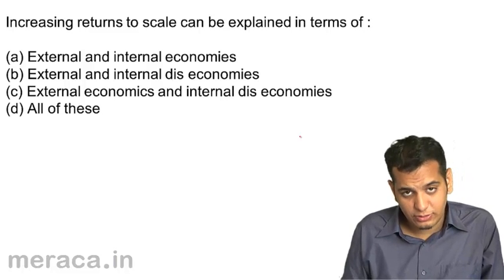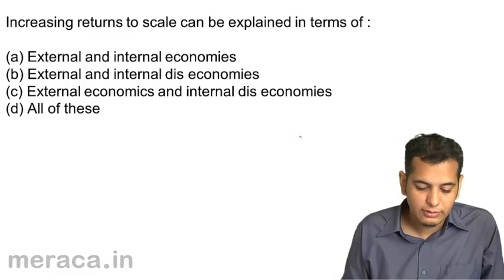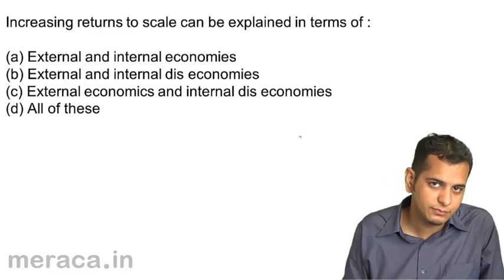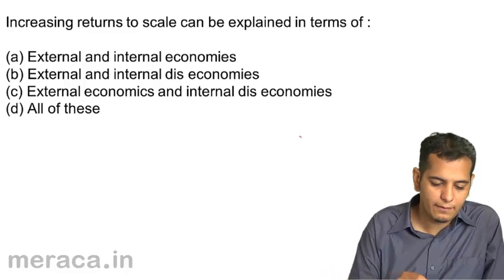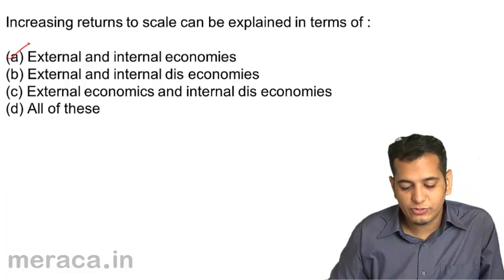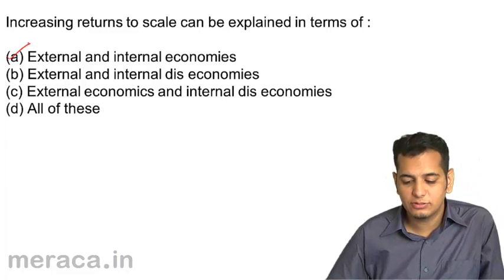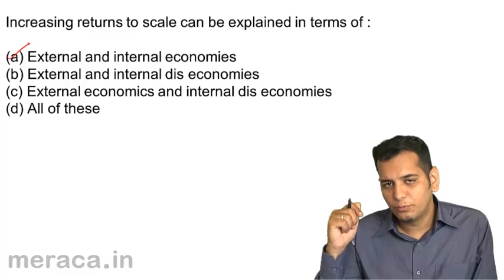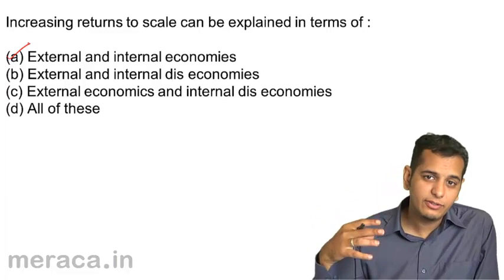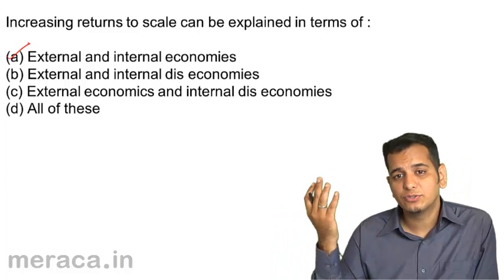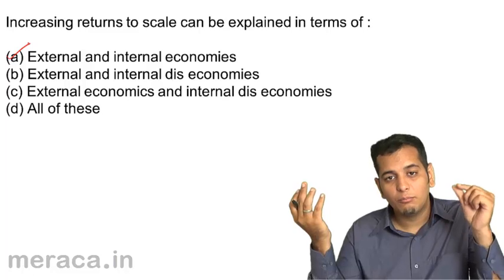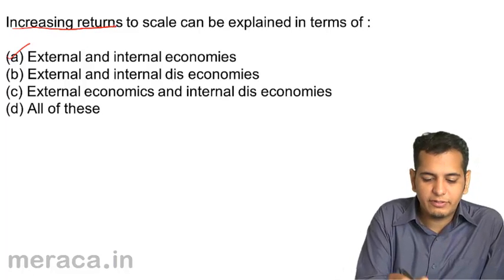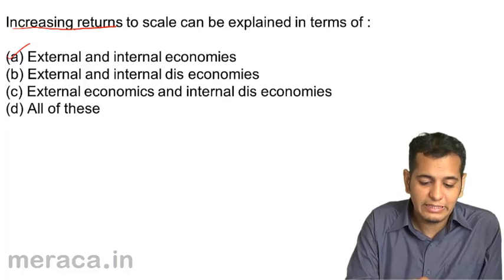Next question: increasing returns to scale can be explained in terms of a) external and internal economies, b) external and internal diseconomies, c) external economy and internal diseconomies, d) all of these. The answer is external and internal economies. When factors of production are increased and you have internal and external economies, your output tends to increase more than the increase in inputs — this is the stage of increasing returns.